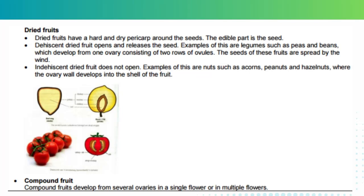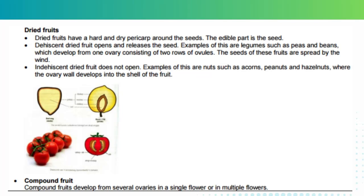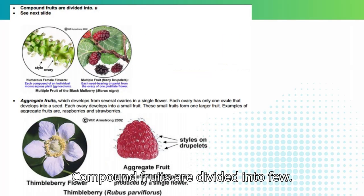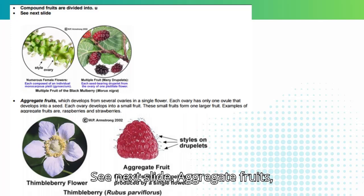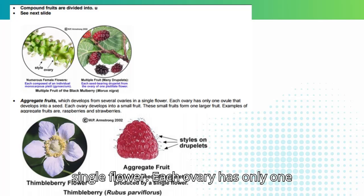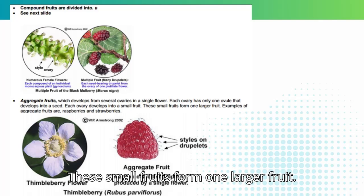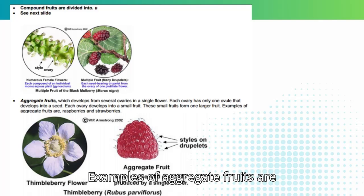Compound fruits develop from several ovaries in a single flower or in multiple flowers. Aggregate fruits develop from several ovaries in a single flower; each ovary has only one ovule that develops into a seed, and each ovary develops into a small fruit; these small fruits form one larger fruit. Examples of aggregate fruits are raspberries and strawberries.